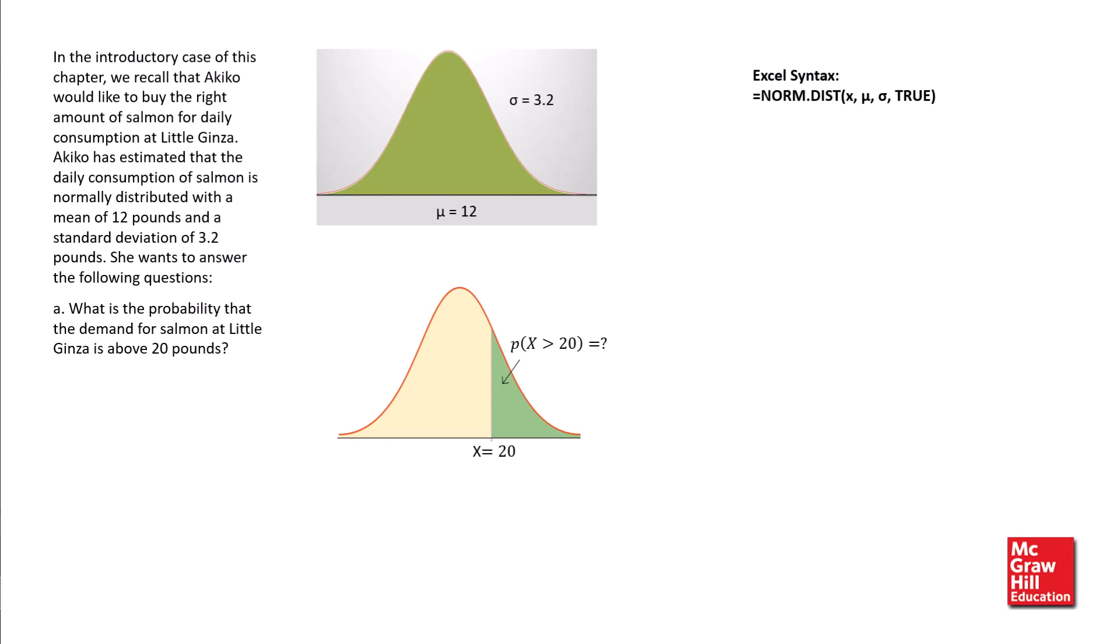We enter true for the last input since we want Excel to return the cumulative probability that x is less than the stated value. Since we want to find the probability that the demand for salmon is above 20, we enter equals 1 minus NORM.DIST 20, 12, 3.2, true. Excel returns 0.0062.